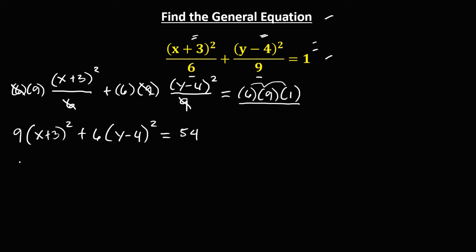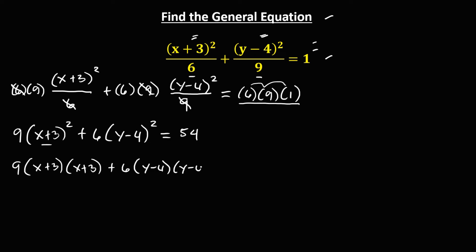Then simplify: we have 9 times — we can write this as (x plus 3) times (x plus 3), then plus 6 times (y minus 4) times (y minus 4), then equals 54.